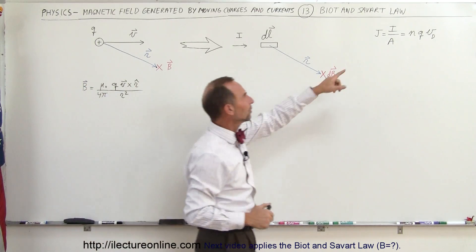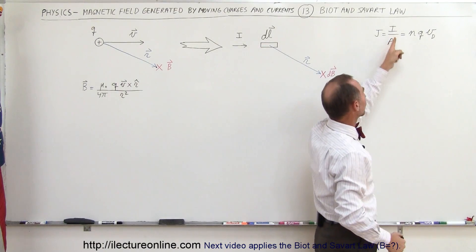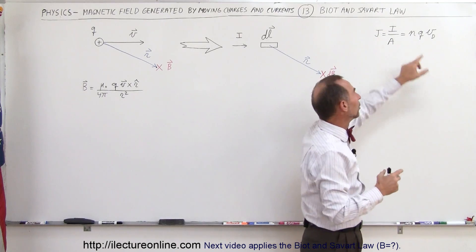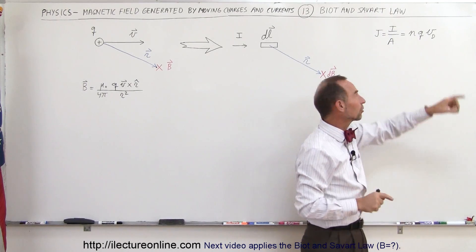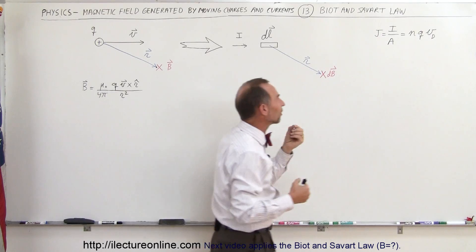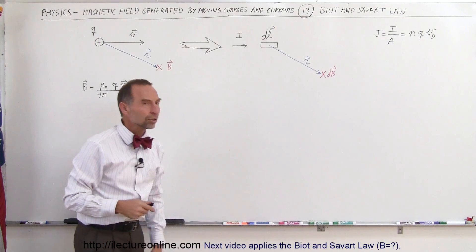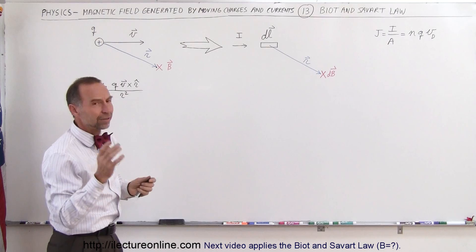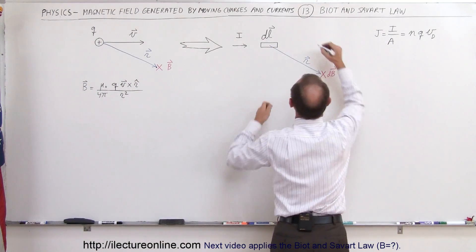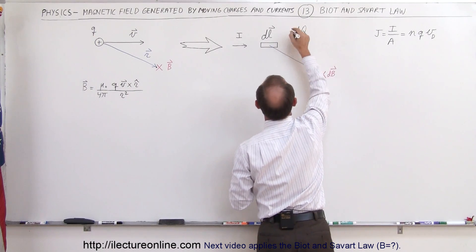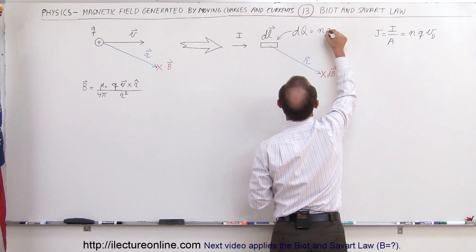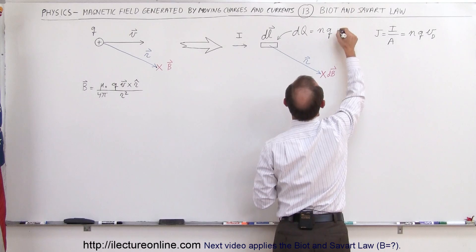Keeping in mind that the current density inside the conductor is equal to the current divided by the cross-sectional area, which is equal to the number of free charges available per unit volume, times the charge per unit volume in the conductor. Q is the charge on each charged particle, and V sub D is the drift velocity of the particles in that conductor. We define the amount of charge in this small little segment as DQ, where DQ equals the number of charged particles per unit volume, times the charge on each particle, times the volume element DV.